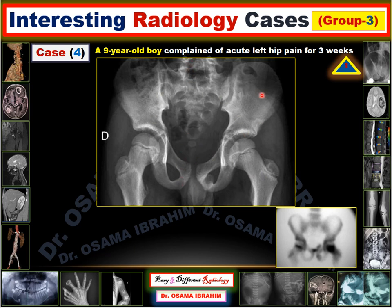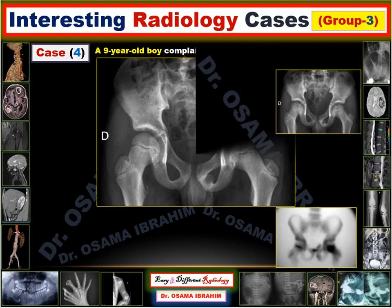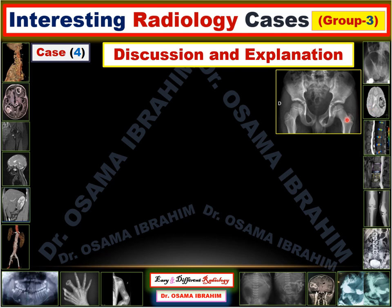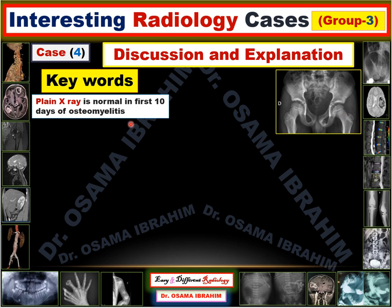Looking at the frontal pelvic X-ray: there is no slipped epiphysis of the femur, no Perthes' disease, no collapse or sclerosis within the hip, and no dislocation. There are osteochondral lesions appearing due to synchondrosis of the ischial bone. No lesions are clearly seen in the X-ray — in osteomyelitis the X-ray may appear normal in the first 10 days to two weeks.